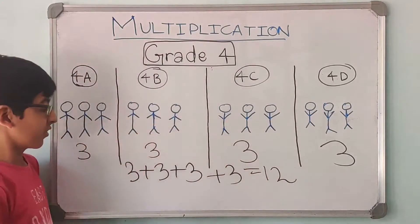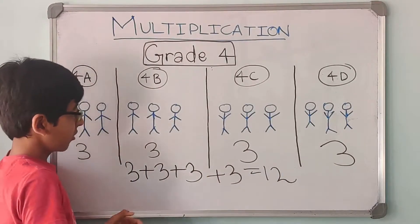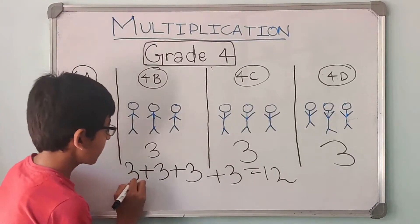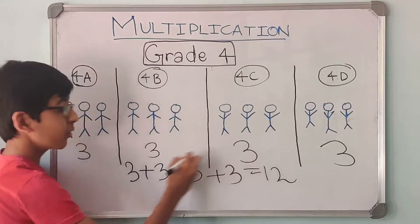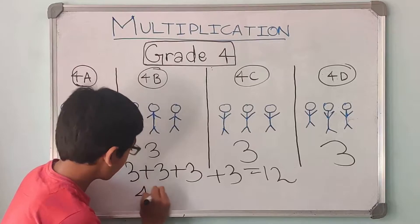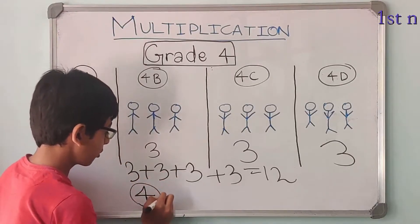Now like this if we have 10 threes, 15 threes, it would become too hard for us. So we will do something else. So over here you can see that there are 4 threes, 4 groups, 4 classrooms. So we will write 4 over here. The first number, the number of groups.